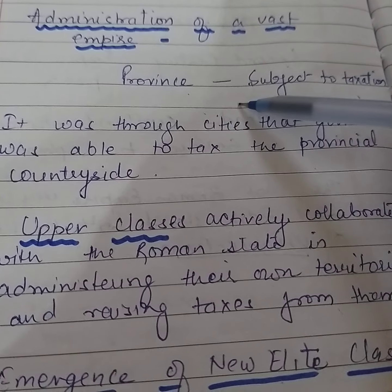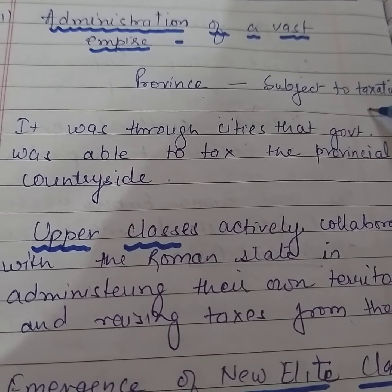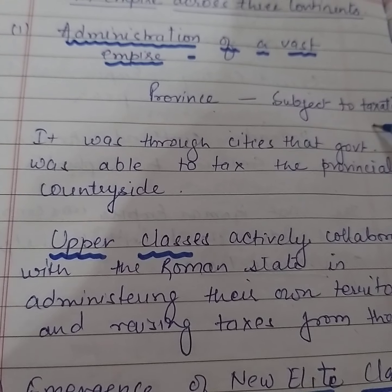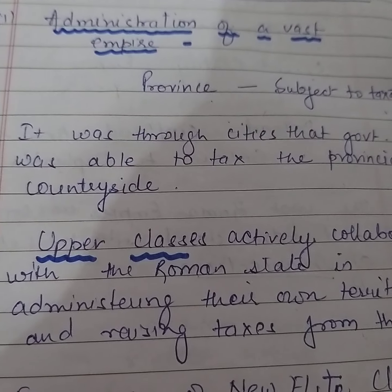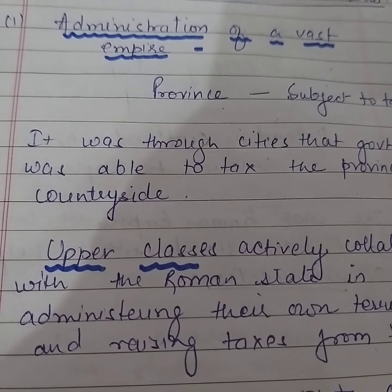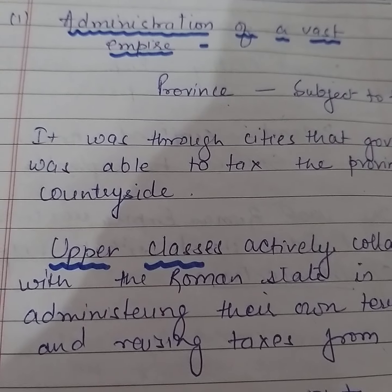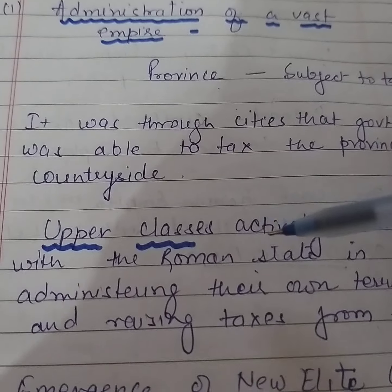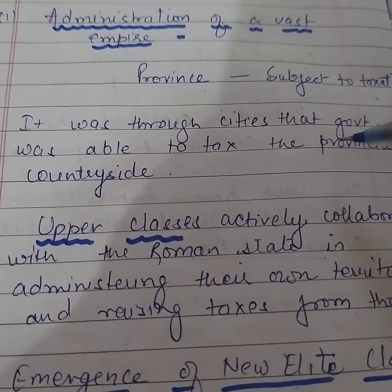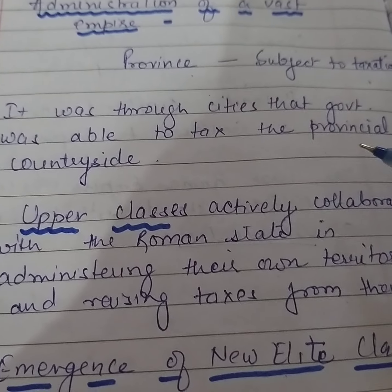All the territories were organized into provinces and they were subject to taxation. If we talk about these provinces, you can see Carthage, Alexandria, and Antioch — they were built near the Mediterranean Sea. They laid the foundations of the imperial systems. It was through the cities that the government was able to tax the provincial countryside, which generated much of the wealth of the empire.